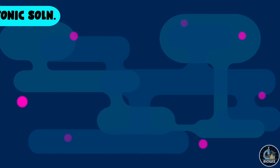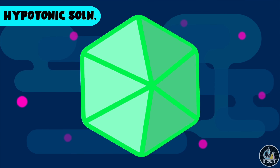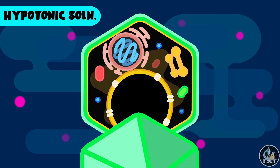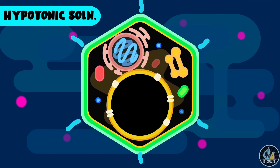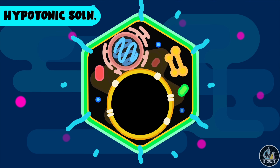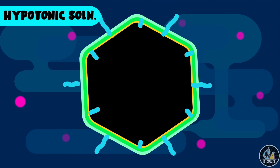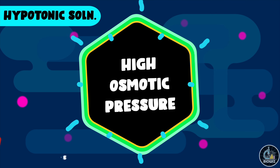Having cleared the types of solution, let's first place the plant cell in a hypotonic solution and see what happens. The water will start to move inside the cell as the osmotic pressure of the cell is higher than the solution.